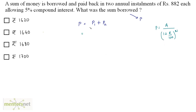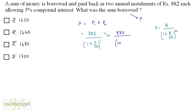For the first installment, the amount is 882, so we have 882 divided by 1 plus 5 upon 100, raised to 1, since the first installment is paid after 1 year — compound interest is levied for only 1 year. For the second installment, the amount is also 882, divided by 1 plus 5 by 100, raised to 2. Why 2? Because the second installment is paid after the second year, so a total of 2 years is the time period for calculating compound interest.